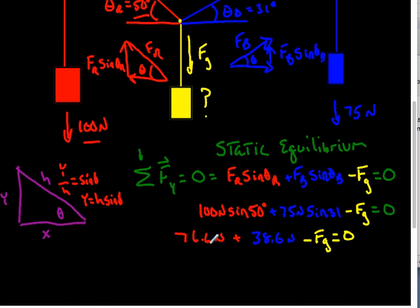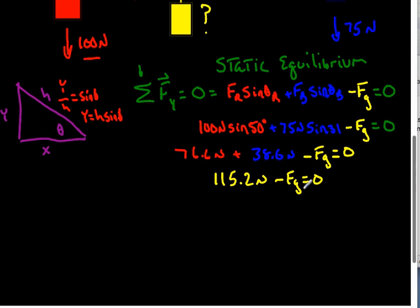And we can see if we add these two together, so I'm going to add those two together. Those two added together are 115.2 newtons. So as we can see, it makes sense that I'm just going to move this over here algebraically, and we can see that the force of gravity actually works out to be 115.2 newtons.